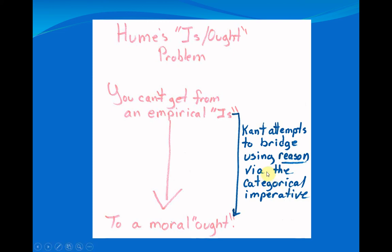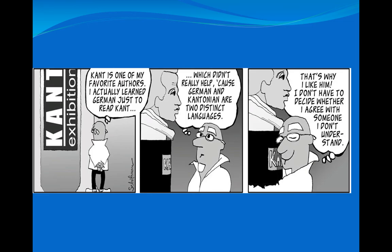Today many secular people still toy with Kant's ideas and assume Hume is right. When Christians make natural law arguments about right and wrong, secular people sometimes invoke the is-ought gap to dismiss them. However, elevating human reason also elevates human autonomy — and biblically, there are serious problems with human autonomy. R.C. Sproul said, and I think he's right, that the fall was really about human autonomy.